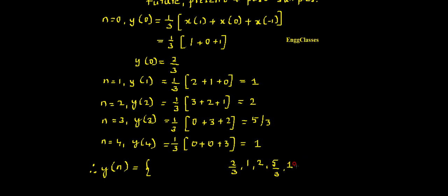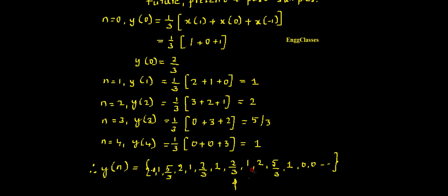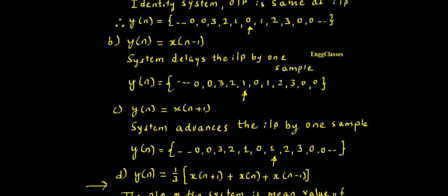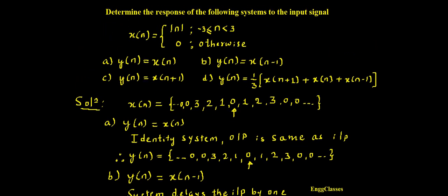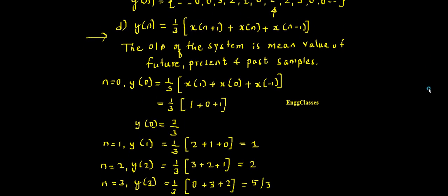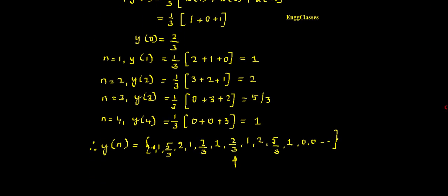The full output y(n) for positive values is: ..., 0, 2/3, 1, 2, 5/3, 1, 0, ... By symmetry, the negative side mirrors this: ..., 1, 5/3, 2, 1, 2/3, ... meeting at the 0th position value of 2/3. This is how y(n) looks for system D. I hope you have understood — if you still have any doubts please let me know in the comment section. Thank you for watching.